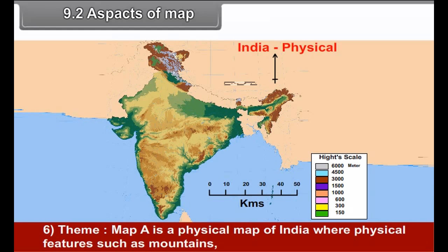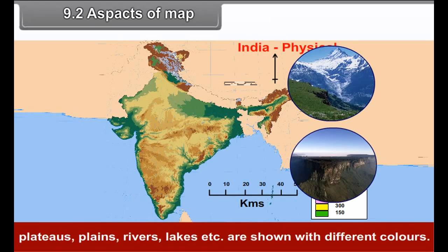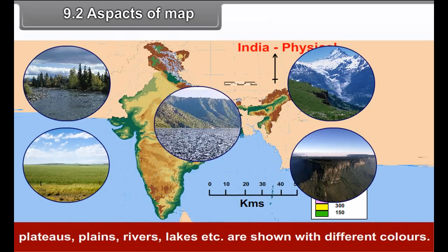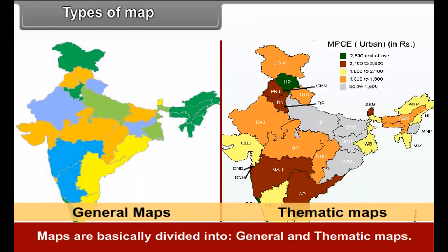Theme: Map A is a physical map of India where physical features such as mountains, plateaus, plains, rivers, lakes, etc. are shown with different colours. Map B is a thematic map mainly indicating the sex ratio in different states in India.